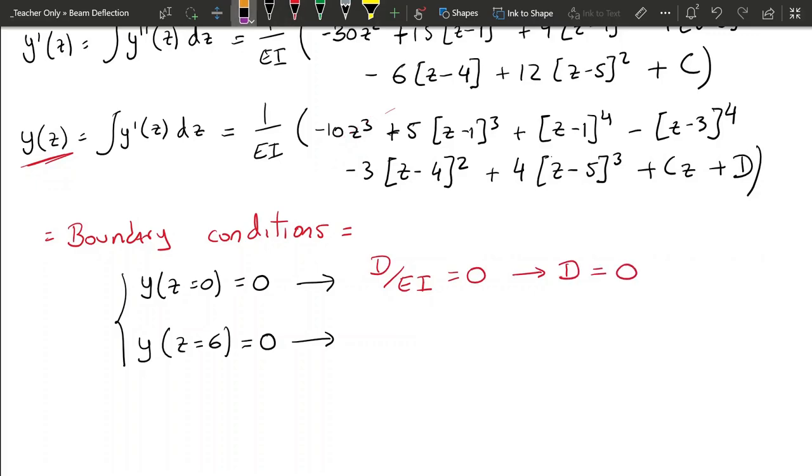But now, when we replace with z equals 6, we are going to have a little bit of a big equation to work with, so let's try to go slowly not to make any mistakes. So 1 over EI, and now we are going to start replacing. Minus 10 times 6 cubed, plus 5 times 5 cubed, plus 4 to the power of 4, minus 3 to the power of 4,